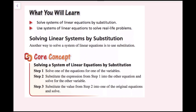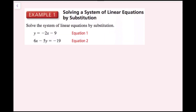This will make a lot more sense once we do an example. For example 1, we have the equation y equals negative 2x minus 9, and then we have 6x minus 5y equals negative 19. We need to solve using substitution. If you notice, one of my equations already has a variable isolated — this y is isolated, it's all by itself. So this y is equal to negative 2x minus 9.